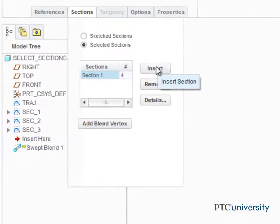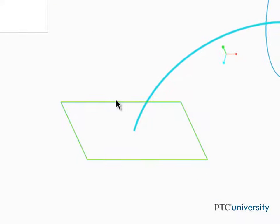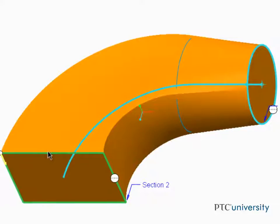In the sections tab, click insert and select the rectangle as section 2. We'll come back and add that middle circle later.